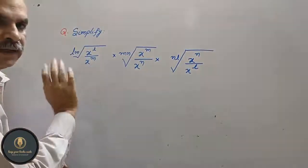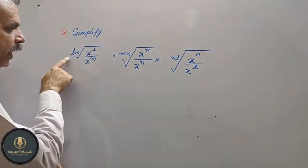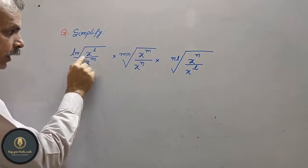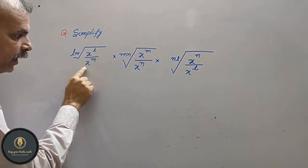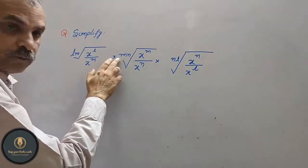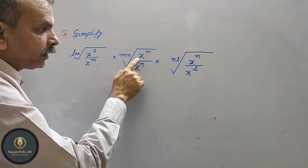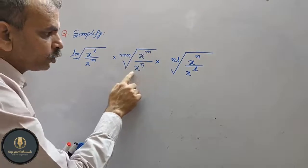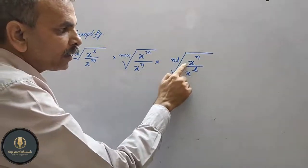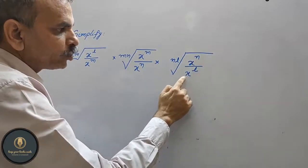The question asks to simplify: lm root x to the power of l divided by x to the power of m, into mn root x to the power of m by x to the power of n, into nl root x to the power of n by x to the power of l.